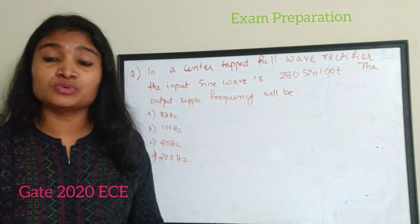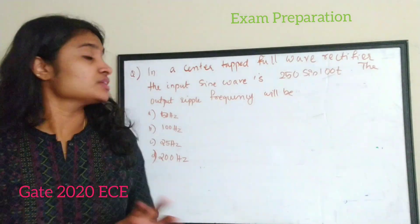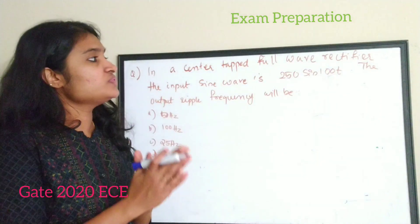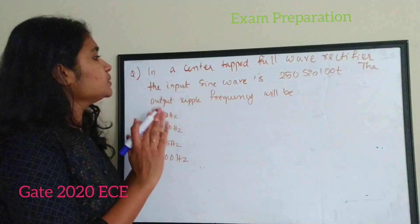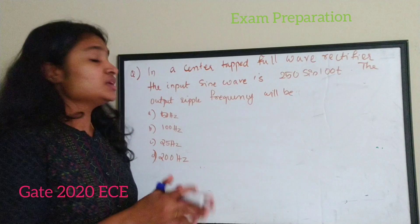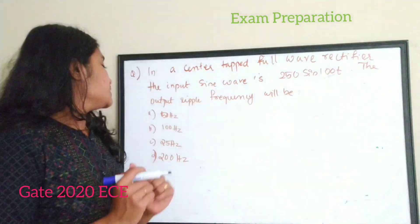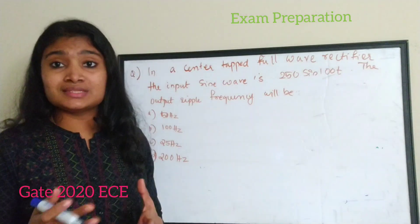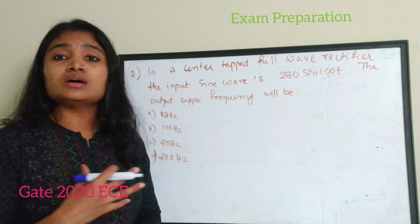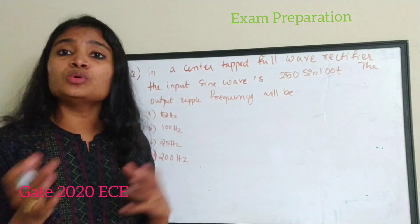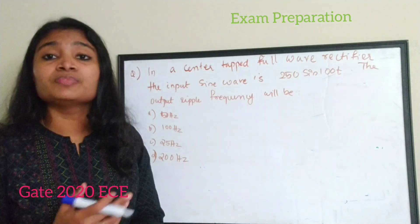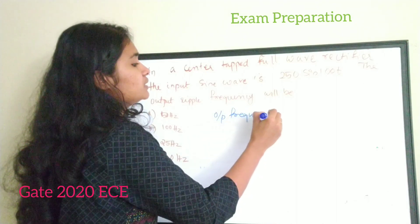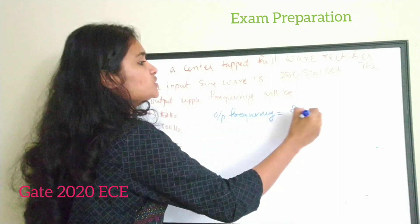The next question is from the center-tap full wave rectifier session. In a center-tap full wave rectifier, the input sine wave is 250 sin(100t). The output ripple frequency will be: A — 50 Hz, B — 100 Hz, C — 25 Hz, or D — 200 Hz. For a center-tap full wave rectifier, the output frequency will be twice the input frequency: output frequency equals 2 times input frequency.